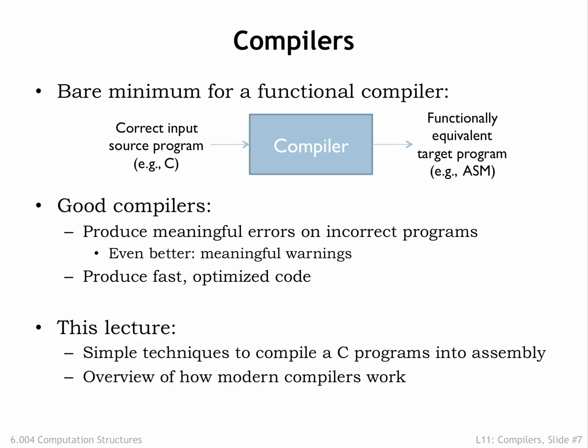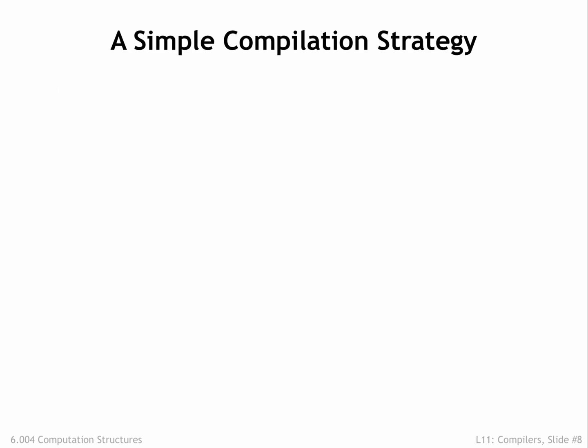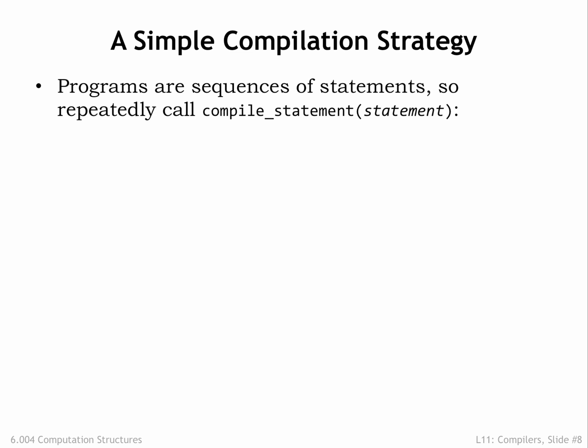In this section we'll look at a simple technique for compiling C programs into assembly. Then, in the next section, we'll dive more deeply into how a modern compiler works. There are two main routines in our simple compiler, compile-statement and compile-expr. The job of compile-statement is to compile a single statement from the source program. Since the source program is a sequence of statements, we'll be calling compile-statement repeatedly.